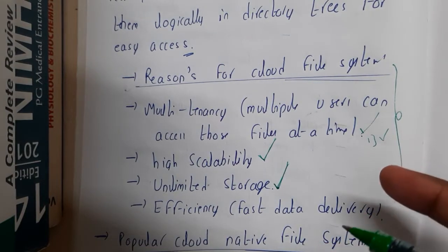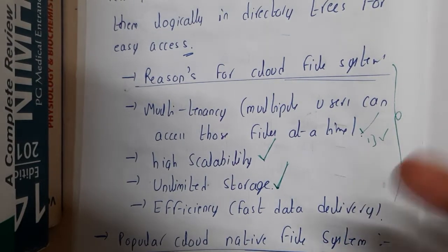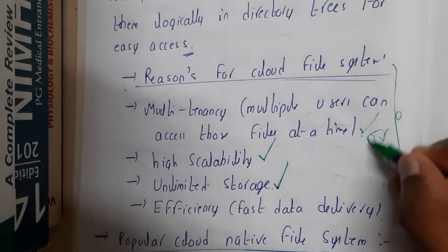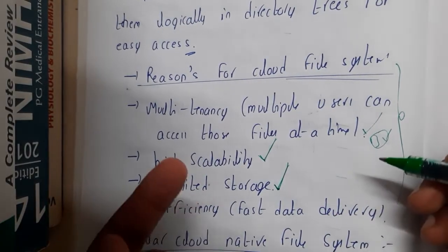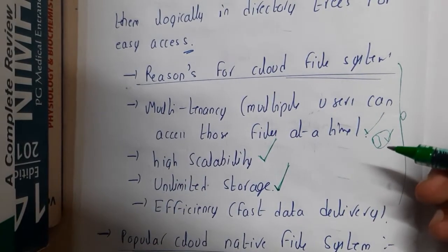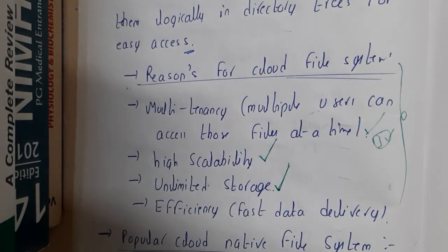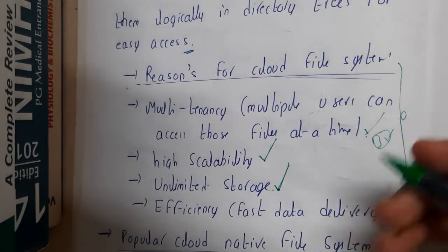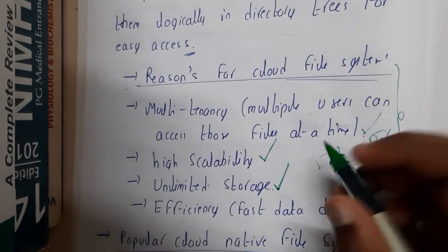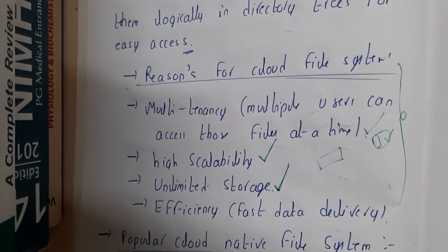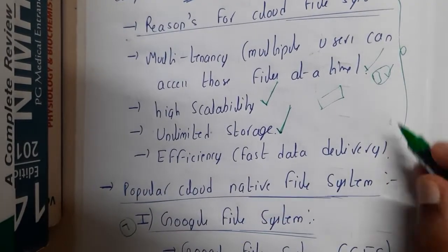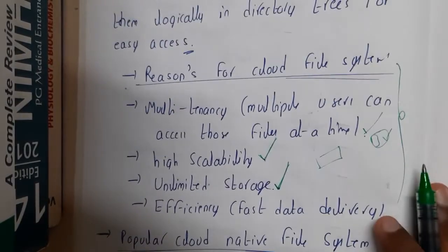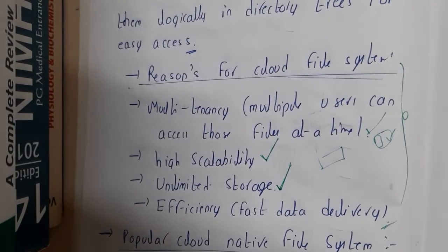If the cloud file system were not there, how could you access someone else's files? You would need to use a pen drive or share personally. But using this cloud file system, you are just given a link, and once you click it, you can access the files. That's an efficient way — it provides fast data delivery. This is the main concept of the file system.